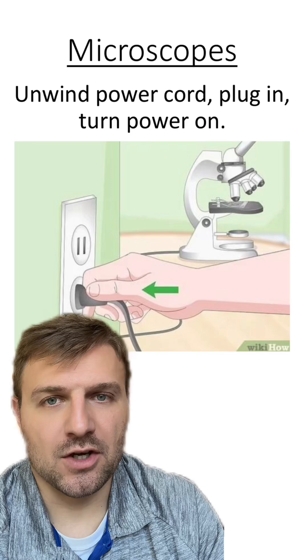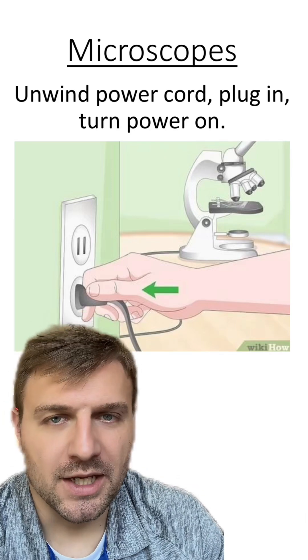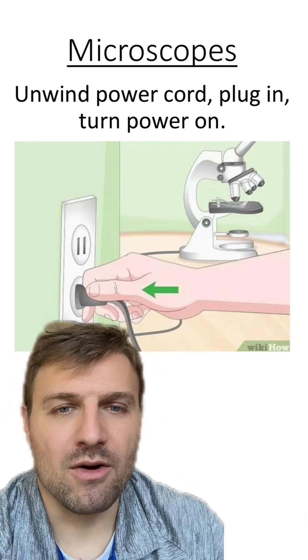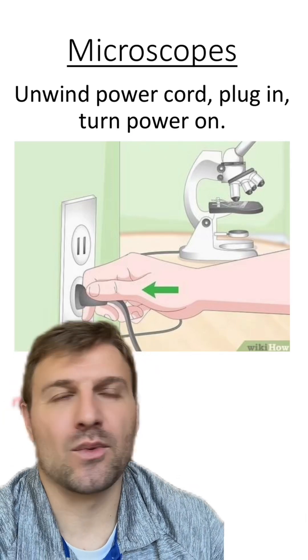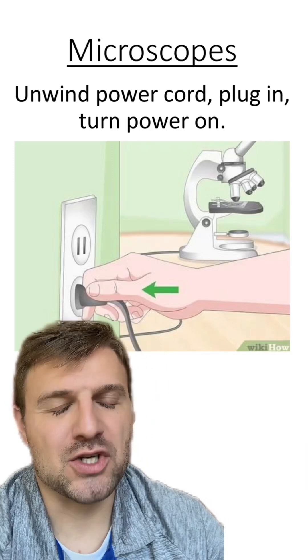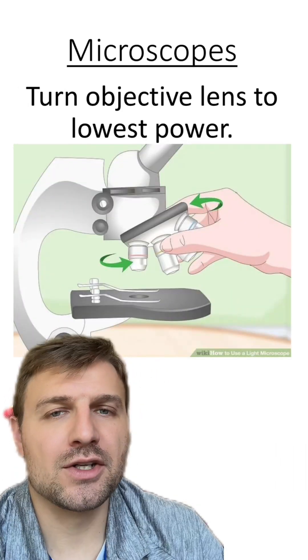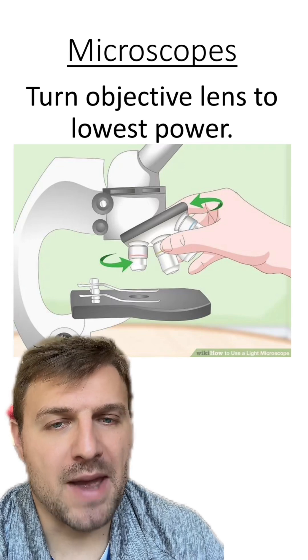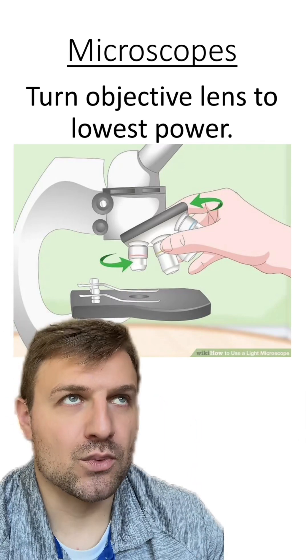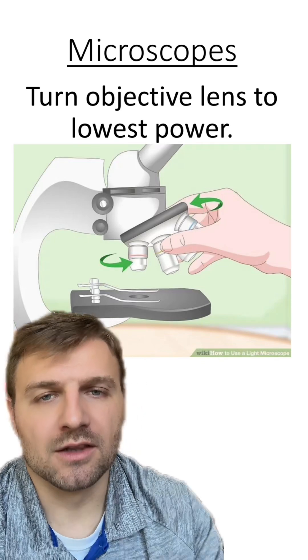How do we actually use these microscopes? First, you're going to unwind the cord and plug it in. And don't forget to turn the power on. Usually, students will forget this and ask, why isn't my microscope working? So just make sure the switch is turned on. Next, you're going to flip the objective lens to the lowest power. That's usually in red. It's really important to always start at the lowest power.